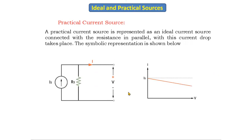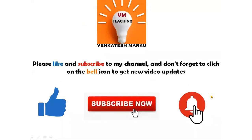To summarize: in the ideal voltage source there is no voltage drop; in the practical voltage source there is a voltage drop because of the internal resistance. In the ideal current source there is no current drop; in the practical current source there is a current drop because of the internal resistance. This is about the ideal sources and practical sources. In the next class we will discuss the next topic. Thank you everyone.